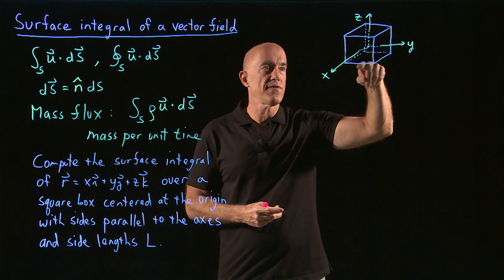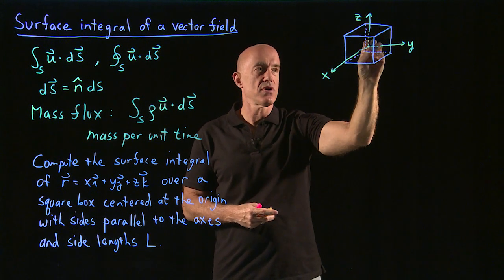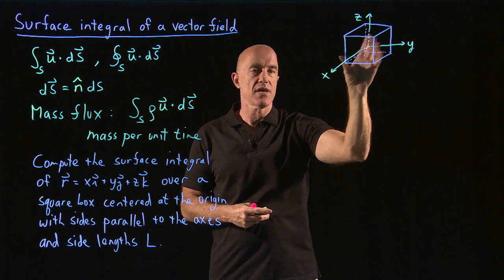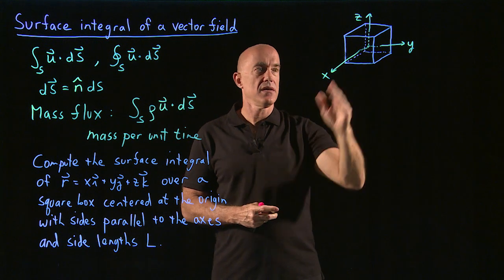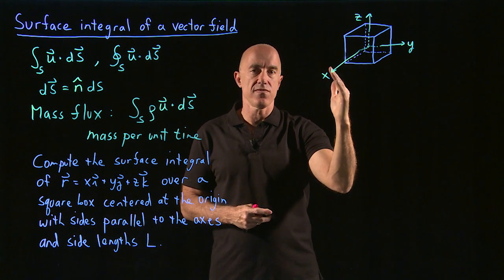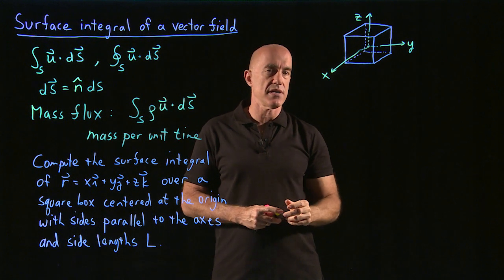So here is a rough drawing of the box. The origin of the coordinate system is supposed to be in the middle of the box. And the length of all of these sides is supposed to be L. So the box goes from minus L over 2 to L over 2 in each of the coordinate directions.